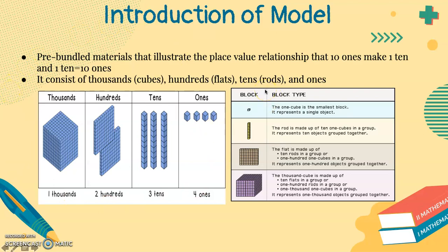Now let's look at the chart on the right. The one cube is the smallest block. It represents a single object. The rod is made up of 10 one cubes in a group. It represents 10 objects grouped together.